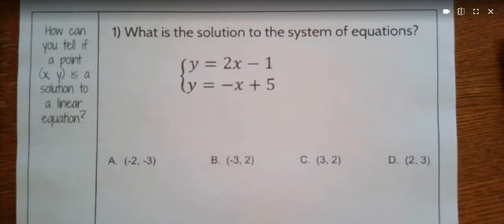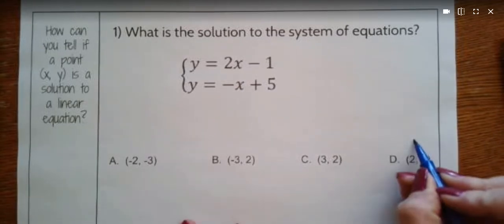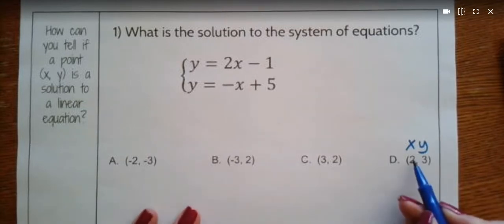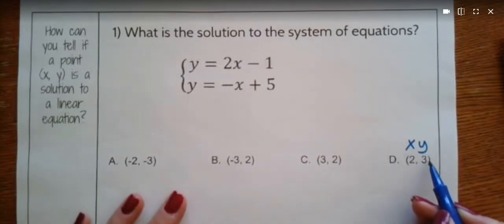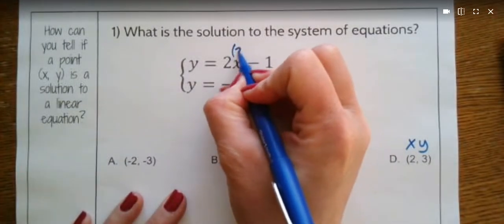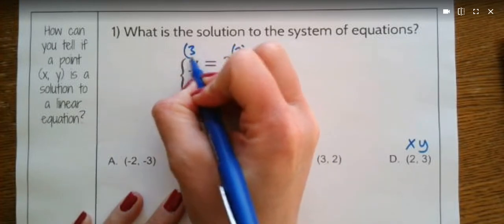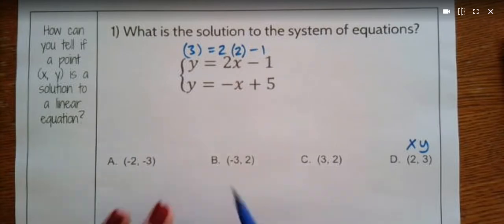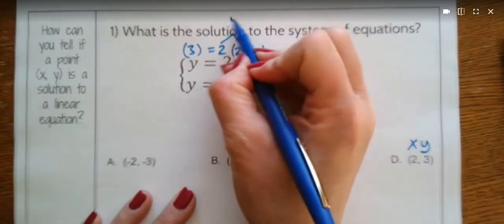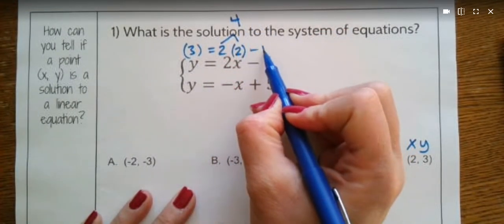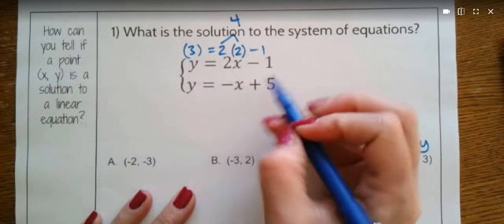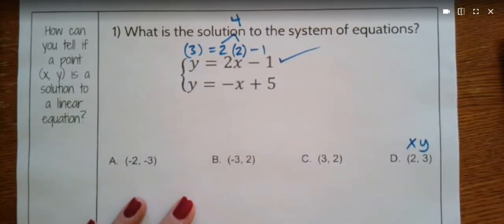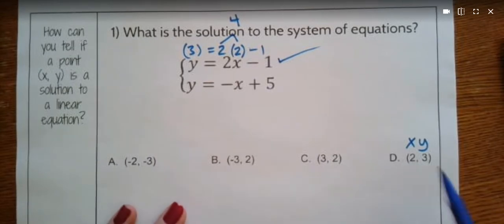Let's try point D, which is (2, 3). I'm going to plug in 2 for x and 3 for y. So 2 times 2 is 4 — is 4 minus 1 equal to 3? Yes, it checks out. That means this point is a solution to the first equation, so now I have to check the second equation.